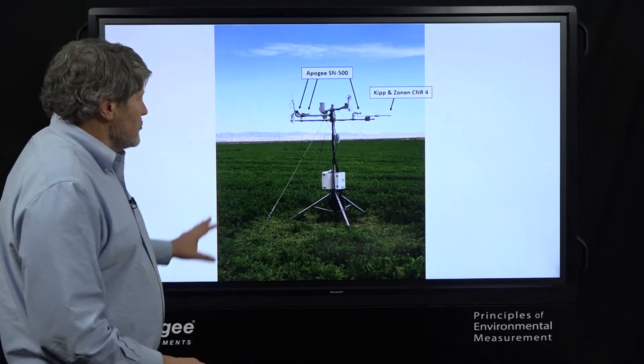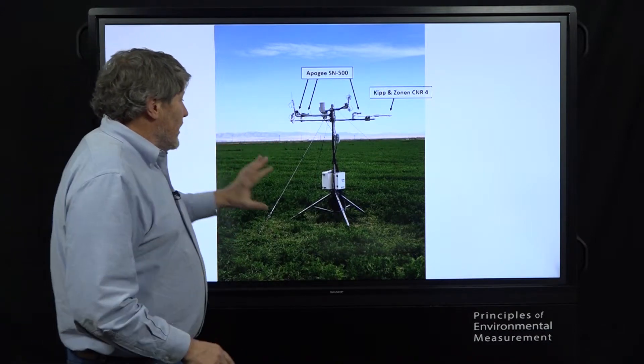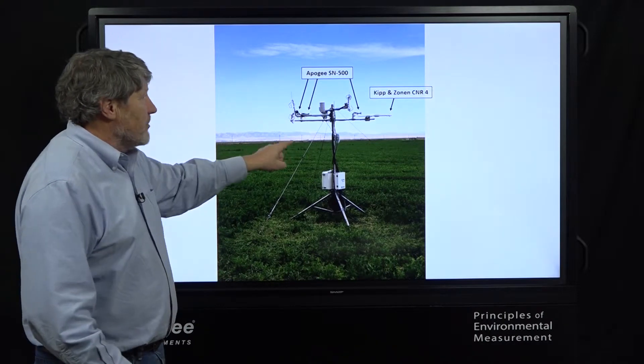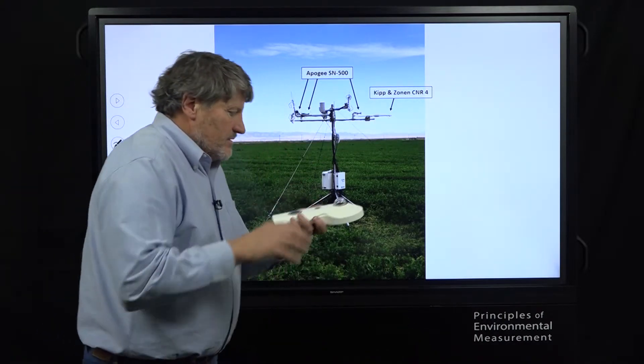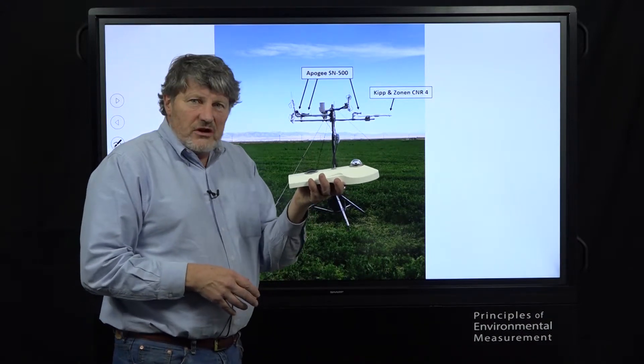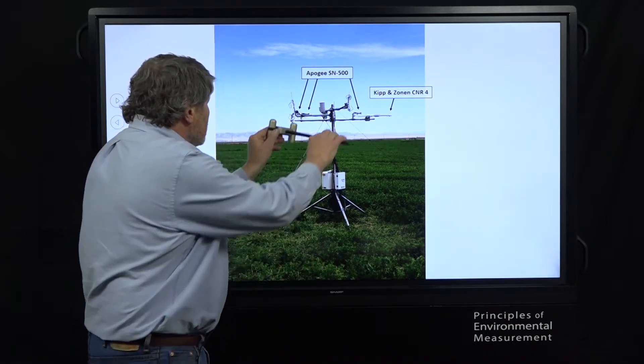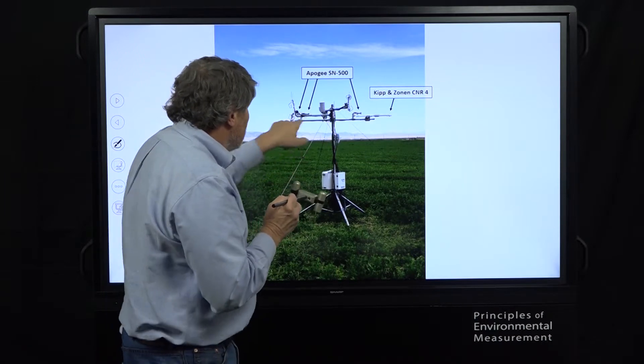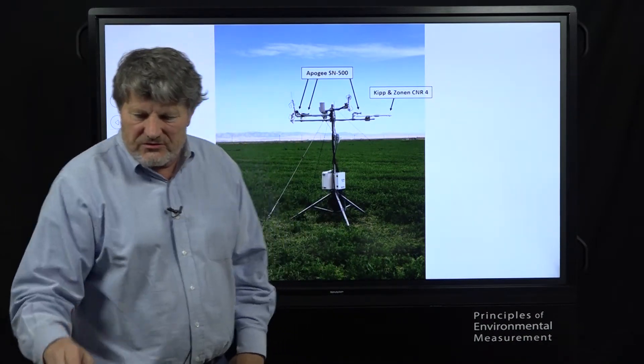We ran this instrument for 15 months, summer, winter, summer, on a weather station over alfalfa. You can tell this is Utah because of all our mountains in the background. Here is the Rolls-Royce instruments, the CNR4 mounted right there on the panel. And if you squint, you can see three Apogees on here. They're small, so we had some bird spikes on here to keep this clean. How's the data come out after 15 months of work?